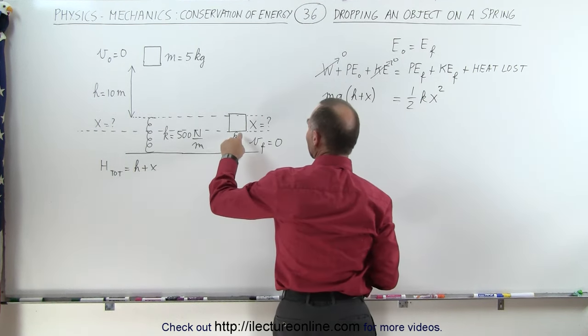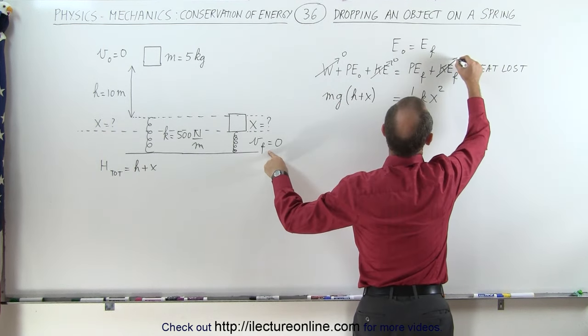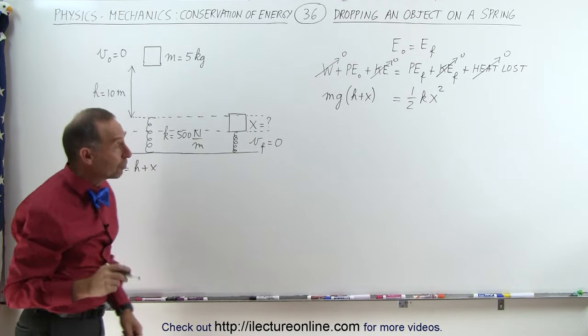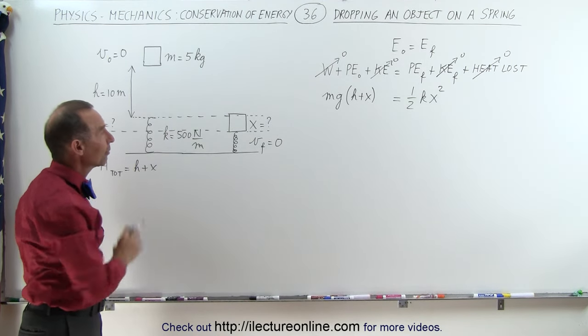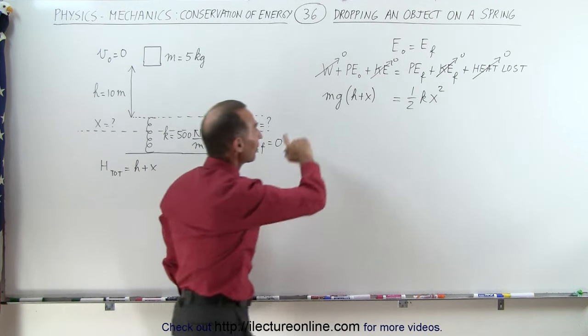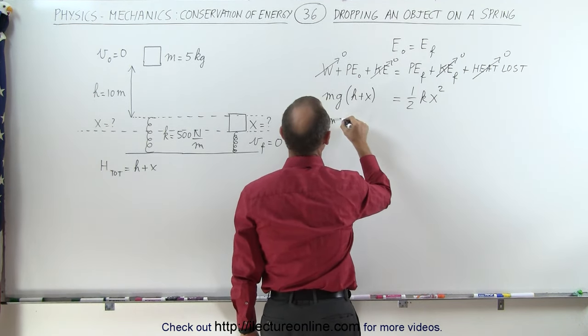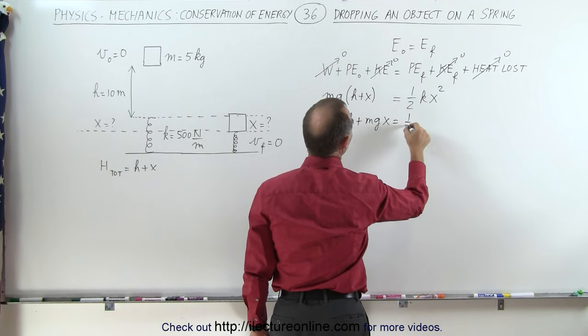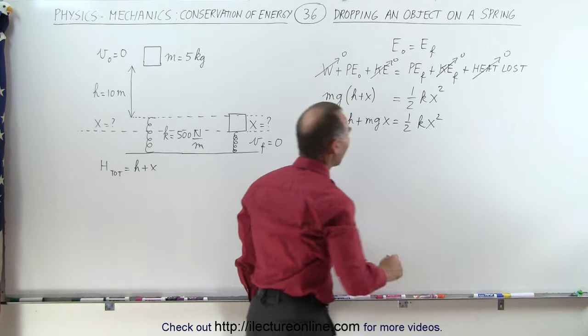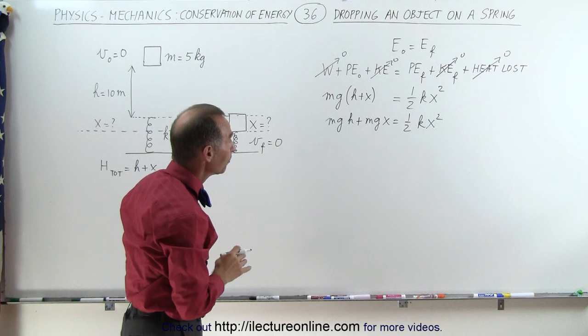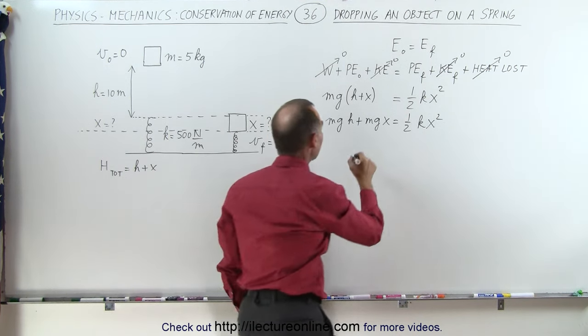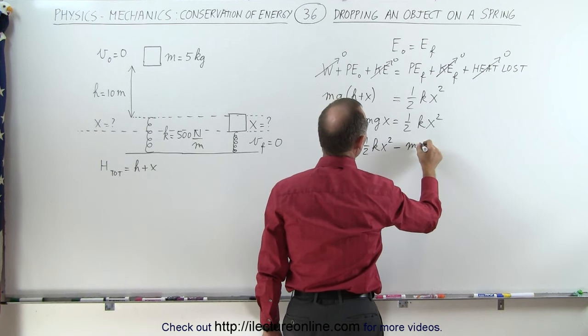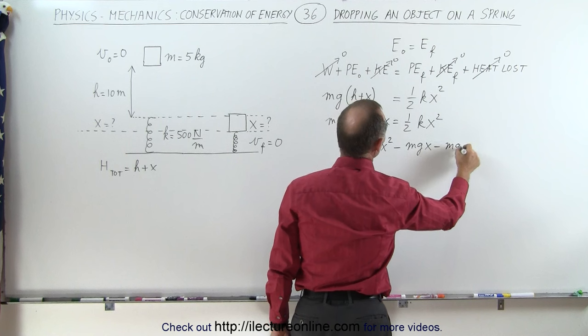There's not going to be any kinetic energy at the end because its velocity will be zero and there's no friction so there's no heat loss due to friction. What we have to do here is take that equation and solve it for x. So let's go ahead and multiply this out, get rid of parentheses first. So we get mgh plus mgx is equal to one-half kx squared and it looks like we're going to end up with a quadratic equation. So let's move everything over to one side. So I have zero is equal to one-half kx squared minus mgx minus mgh.